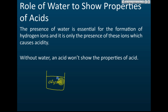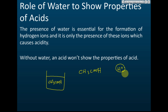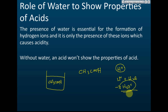In pure acid like ethanoic acid, the molecule exists as CH₃COOH. For acid to show acidity, it must ionize to form hydrogen ions. Without water, there are no hydrogen ions. These hydrogen ions combine with water to form hydroxonium ions, and it is the hydroxonium ion that causes acidity. Without hydroxonium ions or hydrogen ions, the solution will not show acidity.